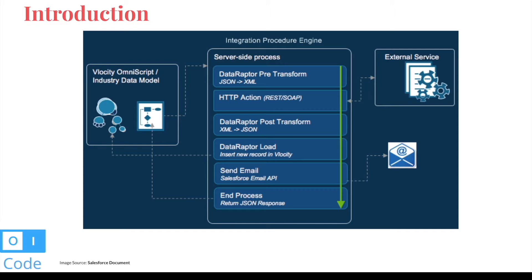IPs are multi-step — multiple actions can be executed within a single IP. As you can see in this diagram, there are a lot of steps being done in a single action or single transaction. We will create a dummy IP and see what kinds of things are available. Let's move to the next slide.